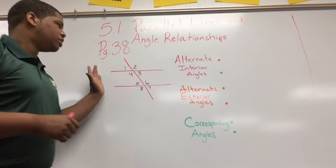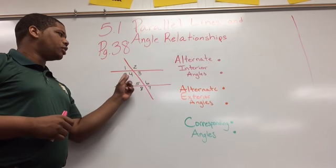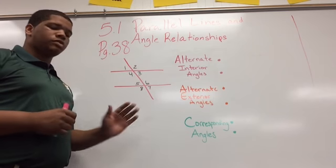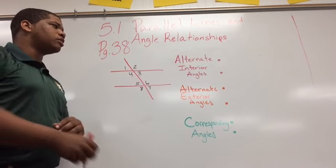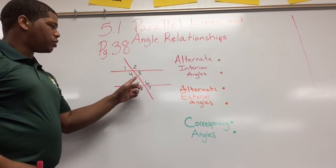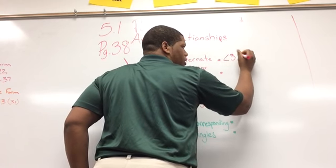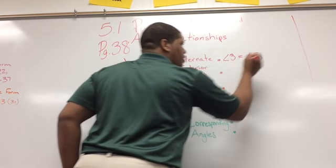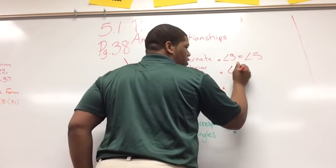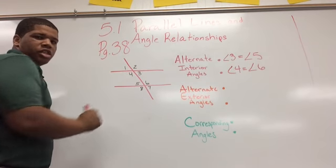We are given these parallel lines cut by a transversal, labeled 1, 2, 3, 4, 5, 6, 7, 8. Let's classify some of these angles. My alternate interior angles would be angles 3 and 5, and angles 4 and 6. So angle 3 equals angle 5, and angle 4 equals angle 6, because they are alternate interior angles.